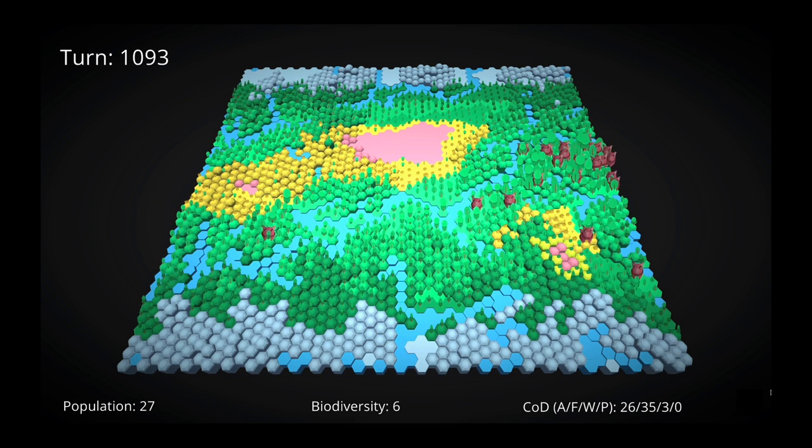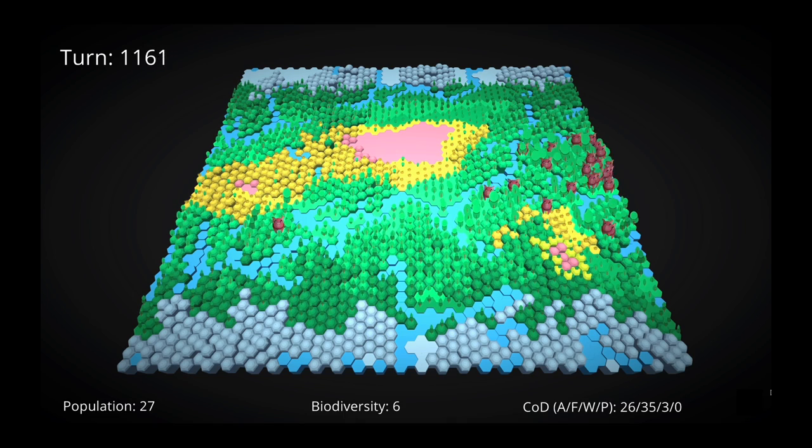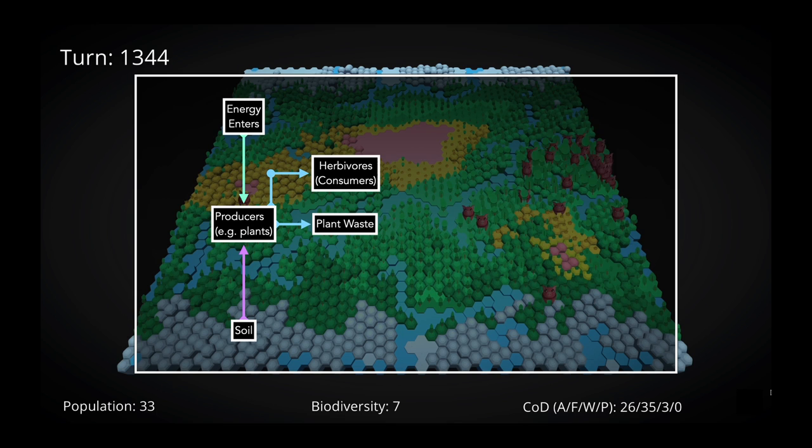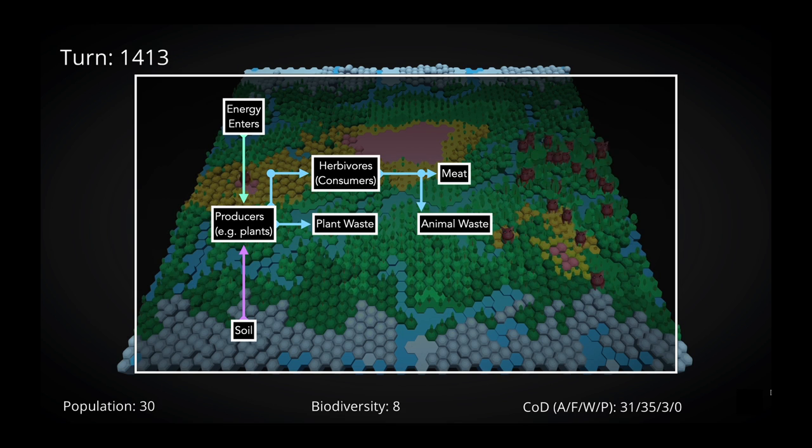So, how can we simulate this? We basically just need to add some additional logic to our tiles and our creatures. We'll start with producers, which consume energy from the sun and take nutrients from the soil. The producers produce plant waste and feed herbivores, which produce both animal waste and meat.